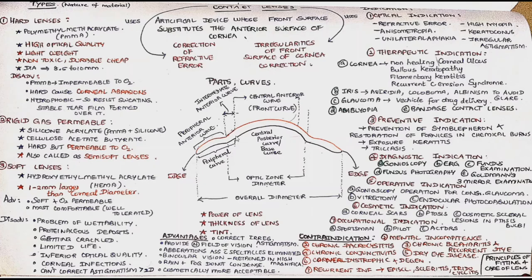For actors different colored lenses are used, and in cases of albinism, colored contact lenses are used to prevent photophobia. There are about seven indications for contact lenses: optical, therapeutic, preventive, diagnostic, operative, cosmetic, and occupational. Optical indications include refractive error, high myopia, keratoconus, irregular astigmatism, unilateral aphakia, and anisometropia.